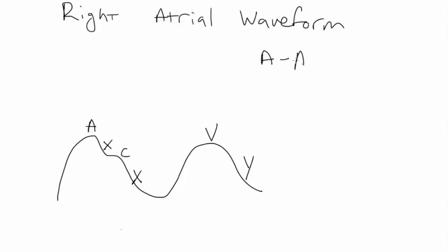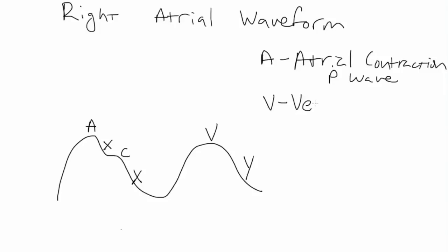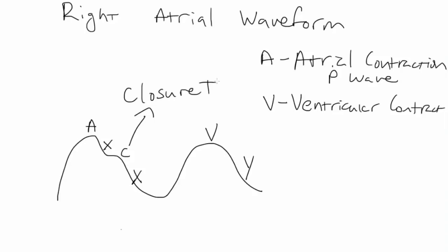The A wave is atrial contraction. If you're watching this on the ECG, you'll see that at the time of the P wave. The V wave is similarly ventricular contraction. The C wave is going to be closure of the tricuspid valve. When the tricuspid valve closes, it causes a reverberation of pressure, which is measured as an increase of this C wave during the X descent.